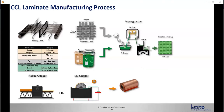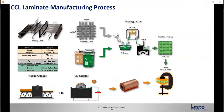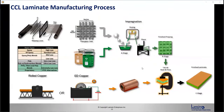Then there's the copper foil — two different types used in the industry: rolled copper and electro-deposited copper. The rolled copper tends to be smoother and more expensive compared to the ED copper. Then sheets of copper get put on each side of the prepreg sheets, and under heat and pressure, you end up with the finished laminate.